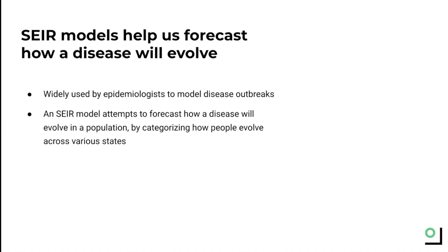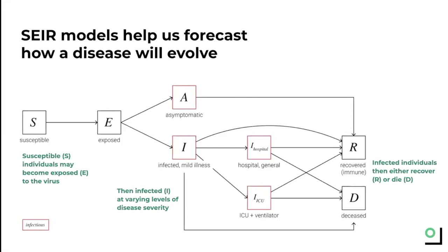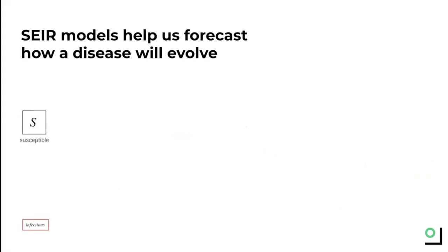The specific kind of model that epidemiologists who study diseases use to understand how a disease will evolve over time is called an SEIR model. At first glance it can seem fairly complex, as this diagram illustrates, but basically an SEIR model shows how individuals move between different stages, which we'll talk about now. The first stage represents individuals who are susceptible — the S in SEIR — and these are people who don't have the disease yet but who are potentially able to contract it in the future.